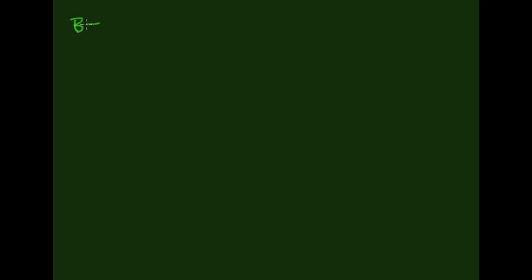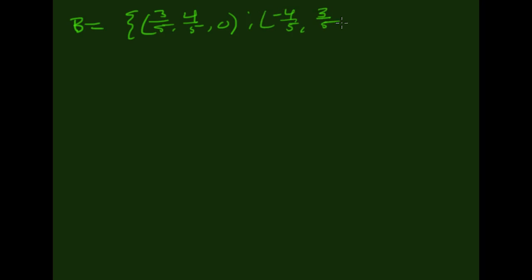Using the theorem that we just wrote, let's get an orthonormal basis for R3. The vectors (3/5, 4/5, 0), (−4/5, 3/5, 0), and (0, 0, 1) are, in fact, an orthonormal basis for R3. You could check that all of these are orthogonal to each other and they all have a magnitude of 1.